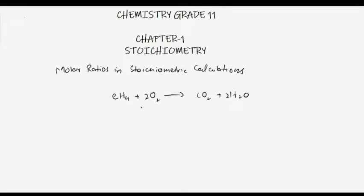One molecule of methane reacts with two molecules of oxygen to produce one molecule of carbon dioxide and two molecules of water. These coefficients — 1, 2, 1, and 2 — represent the number of moles. So one mole of methane reacts with two moles of oxygen to produce one mole of carbon dioxide and two moles of water. You can also convert these moles into grams and number of molecules.